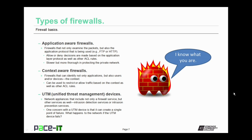There are application-aware firewalls. These are firewalls that not only examine the packets, but also the application protocol being used — so it knows if it's FTP or HTTP. Application-aware firewalls make allow or deny decisions based on the application-layer protocol as well as other ACL rules. They are slower but more thorough in protecting the private network than firewalls that are not application-aware.